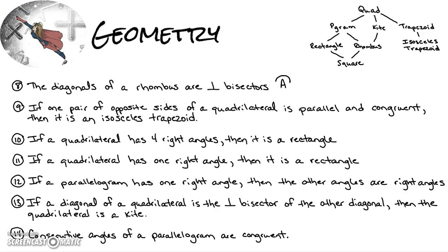Number eight: the diagonals of a rhombus are perpendicular bisectors. That is always true — it's a property of a rhombus. The diagonals intersect at a 90-degree angle, and because a rhombus is a parallelogram the diagonals are bisected. Since this is a property of rhombuses, it's always true.